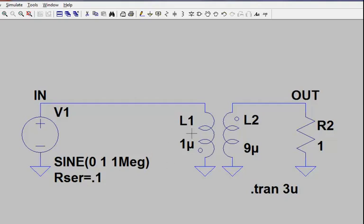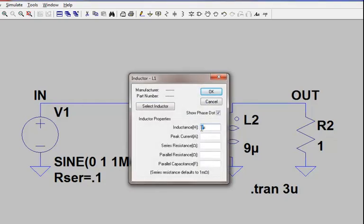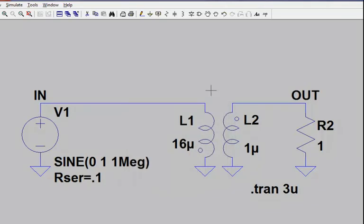Likewise, if the primary is modeled with 16 microhenrys and the secondary is modeled with 1 microhenry, we can now view that as a 4 to 1 turns ratio by taking the square root of the inductance ratio.